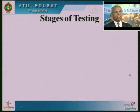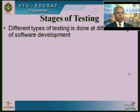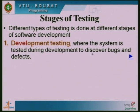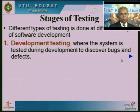Now, what are the different stages of testing? Different types of testing are done at different stages of software development. The first is development testing — during development, each programmer has come up with certain modules assigned to them, and we test this portion during the development phase itself to discover bugs and defects so they can be corrected immediately before the system is finally ready.